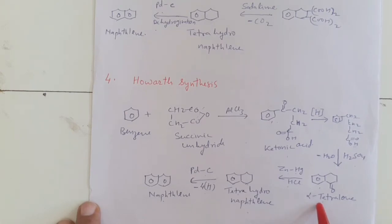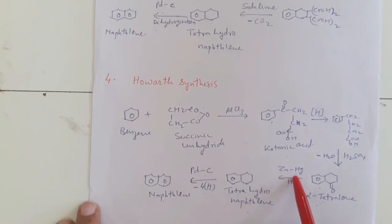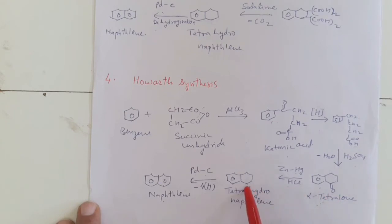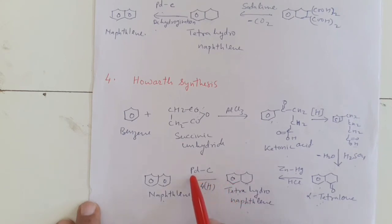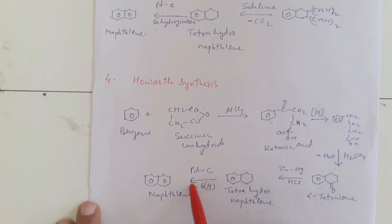This cyclic compound tetralone, again reduced with HCl in the presence of zinc and mercury — that is, Clemmensen reduction — the CO group converts into the CH2 group and we get tetrahydronaphthalene. This tetrahydronaphthalene, in the presence of palladium and carbon, removes hydrogen atoms and we get naphthalene.